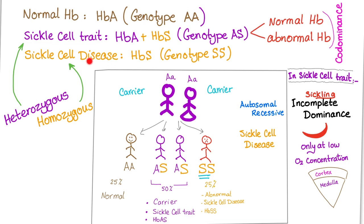In sickle cell disease, it's called hemoglobin S and the genotype is SS. In sickle cell trait, you have a mixture — hemoglobin A and hemoglobin S — so the genotype is AS. This is a co-dominance phenomenon in genetics, where you have both normal and abnormal hemoglobin in the same body. Sickle cell trait is heterozygous AS, while sickle cell disease is homozygous SS.